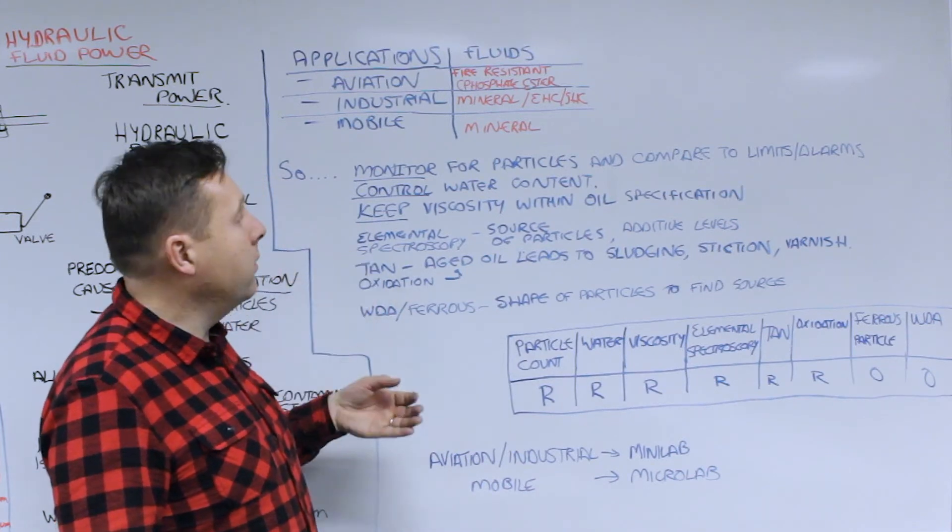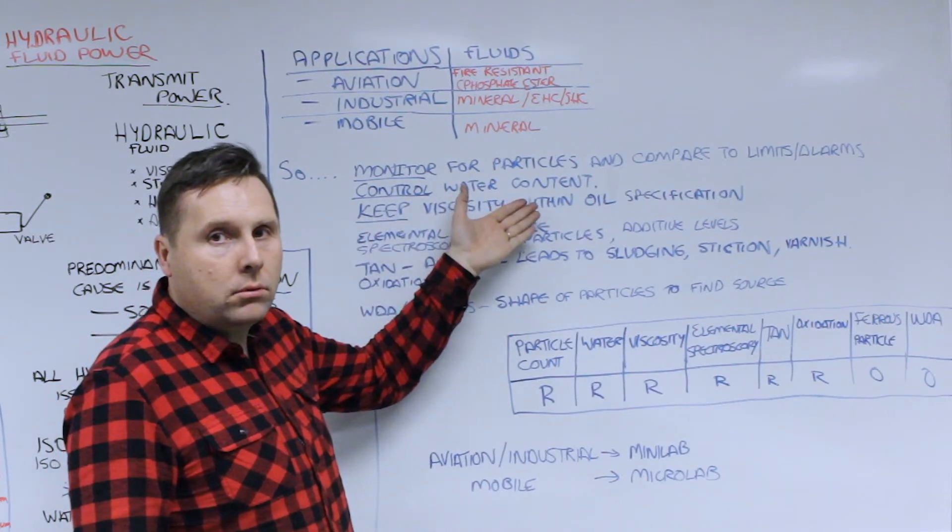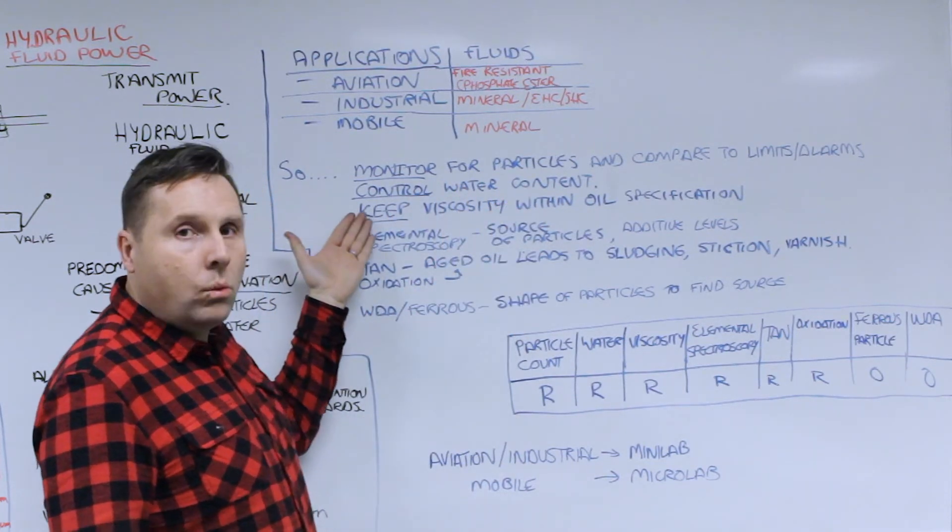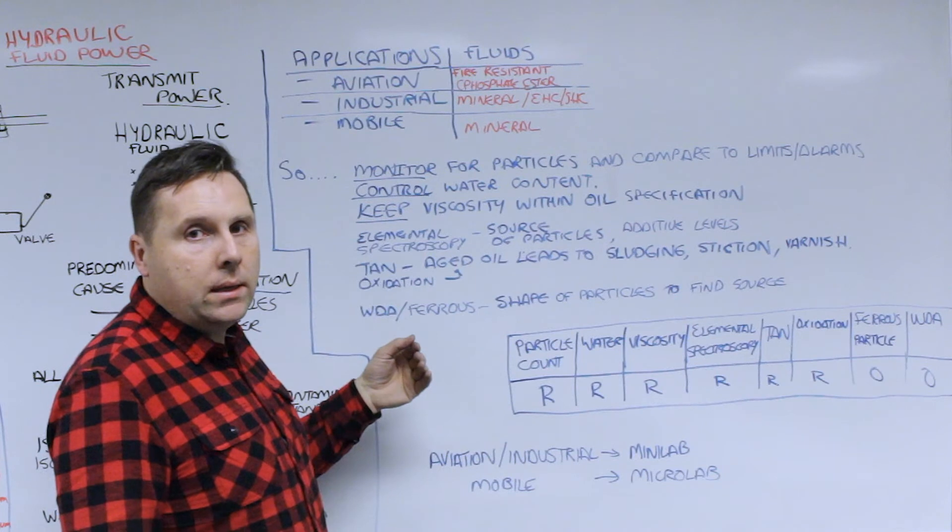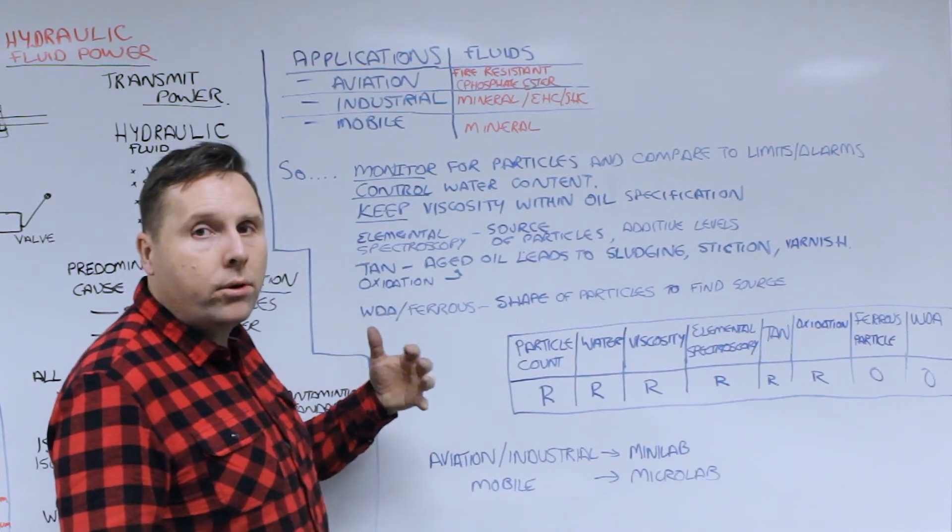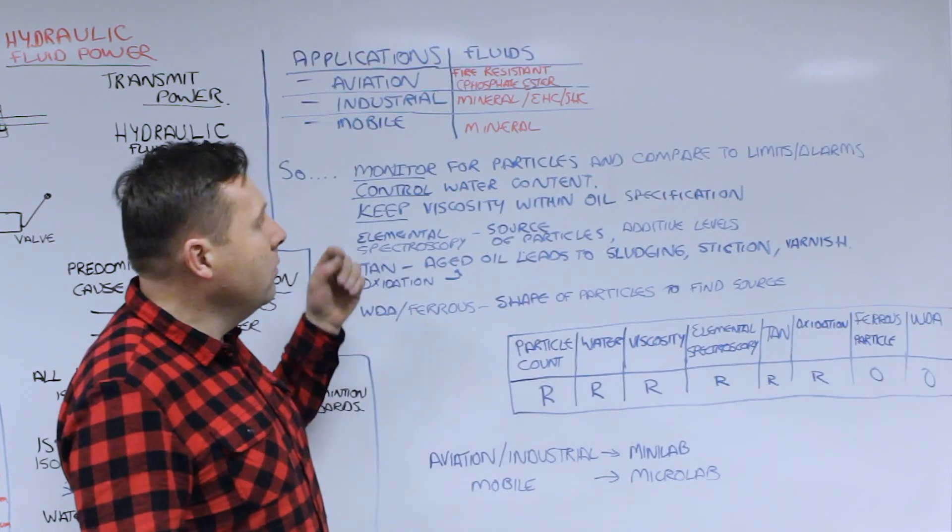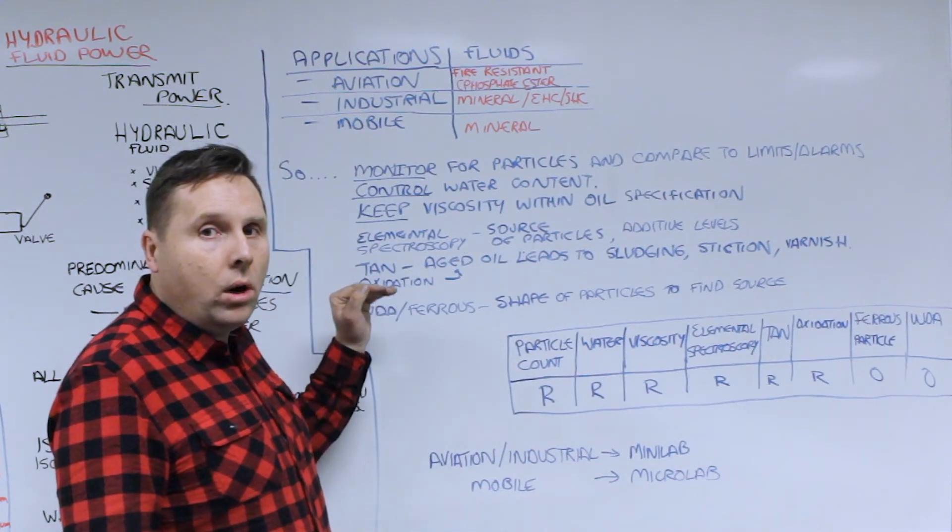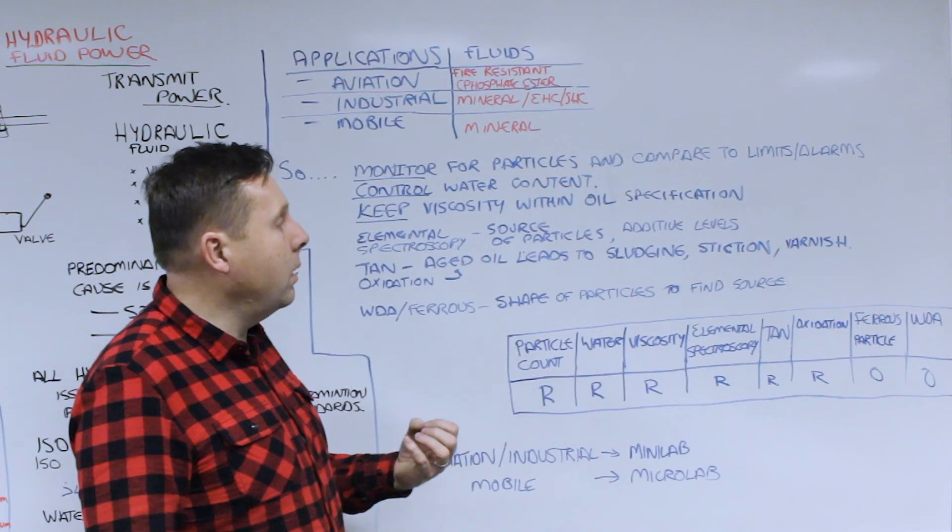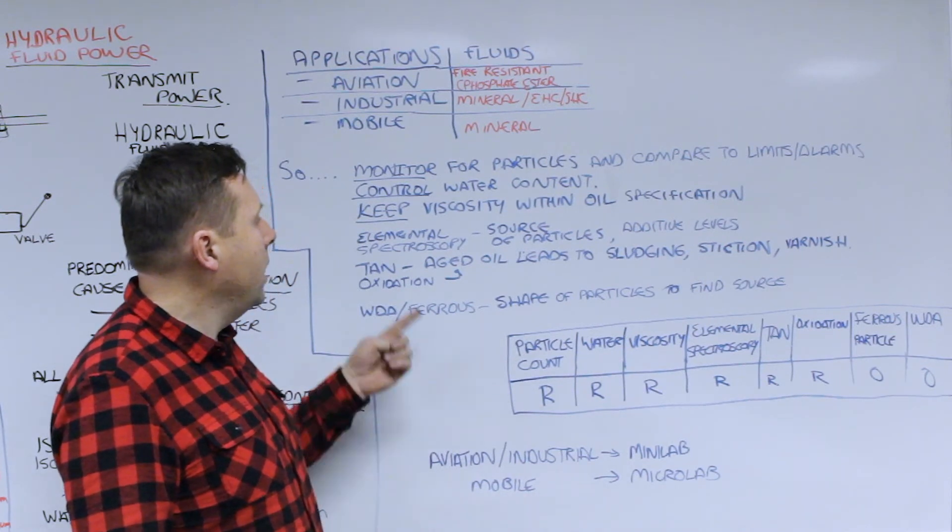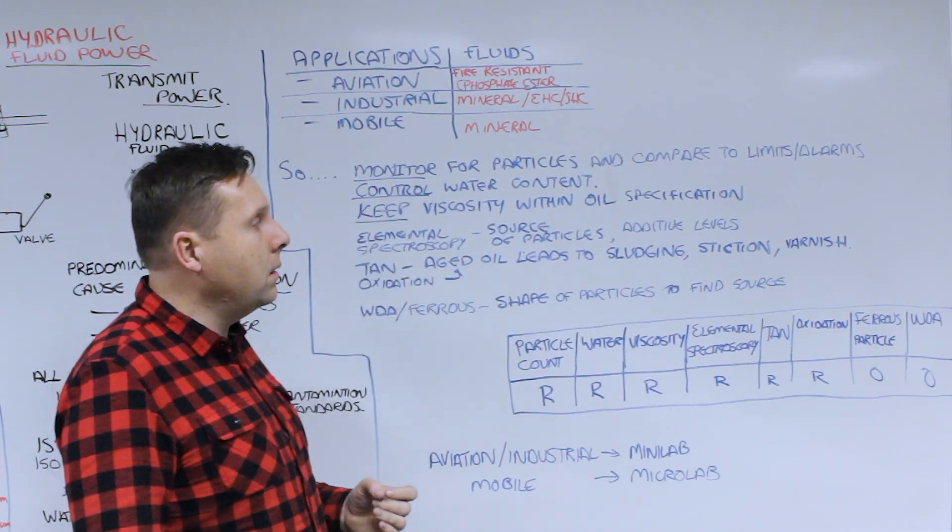Why do we care about the monitoring? Well we always monitor as we said earlier for particles and we want to compare that to known OEM limits or alarms. We want to control the water content to keep that ideally under 2,500 ppm or less depending on the application. Higher water leads to potential corrosion problems and leads to problems with transmitting power. We always want to keep the viscosity of the oil within its operational oil specification limits. A heavy oil will cause problems. You want to keep it within a certain range.